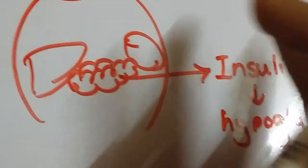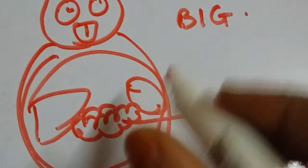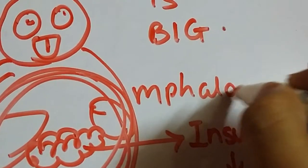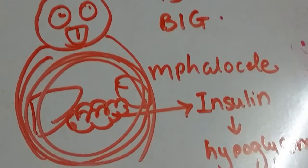The organs are so big that they cannot be contained in the body, and this leads to omphalocele.